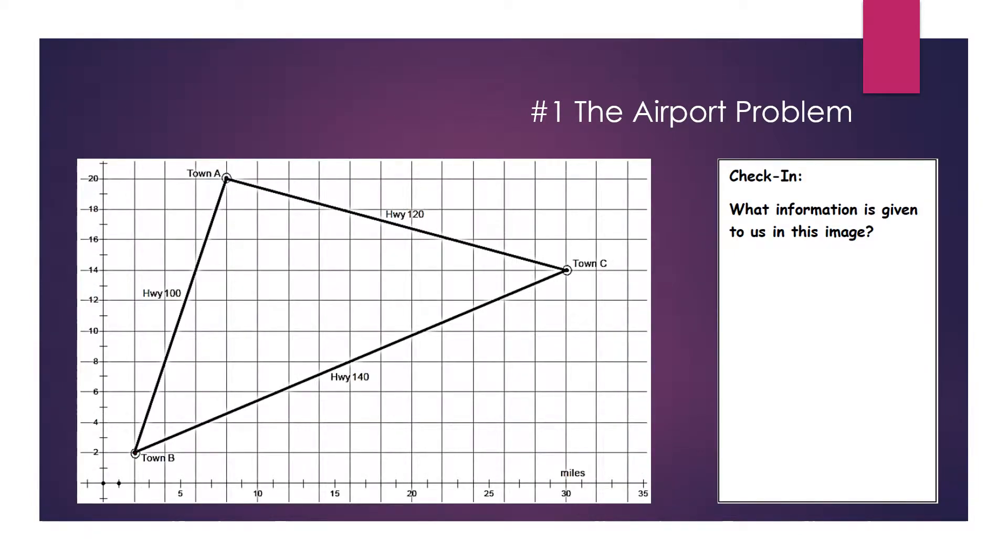So this is the actual picture that I gave them, and you can see that I started with a check-in. What's happening in this image? Students talked about mileage, they noted the scaling of the axes, and they also found that they had three towns that were connected by three highways.